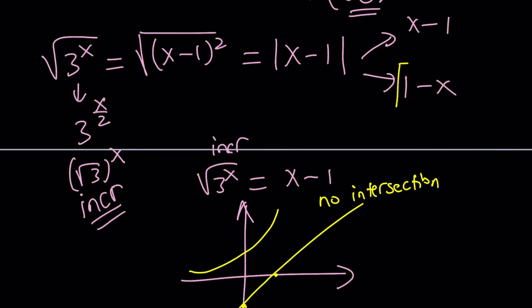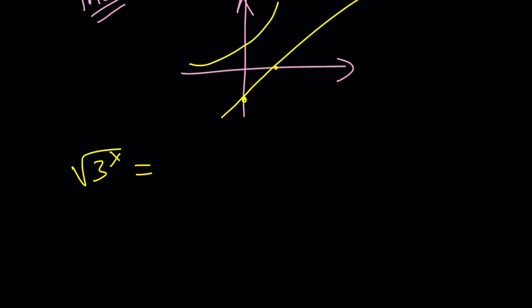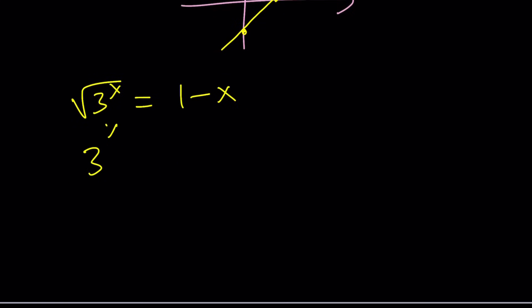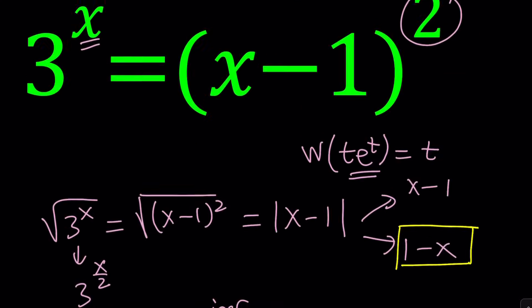Therefore √3^x must equal 1−x, not x−1. So we have: square root of three to the power x equals 1−x. Now I want to write the left hand side as three to the power x over two, because taking the square root means raising to the one-half power, and this equals 1−x.